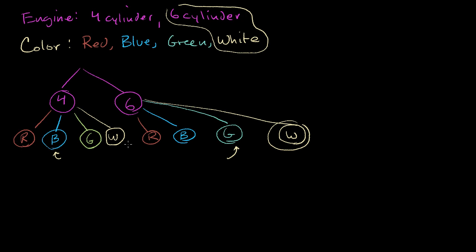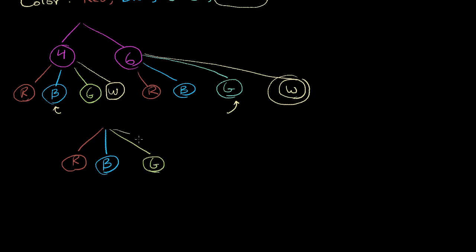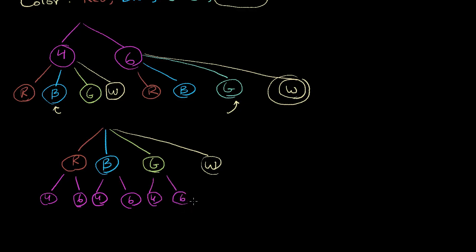Now, this wasn't the only way we could have drawn the tree diagram. We could have thought about color as the first branch. So we're either going to get a red, blue, green, or white car. And then for each of those colors, we're either going to get a four-cylinder or a six-cylinder engine. This would be another way of drawing a tree diagram to represent all of the outcomes.